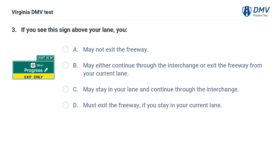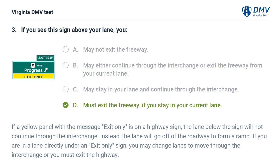If you see this sign above your lane, you: A. May not exit the freeway, B. May either continue through the interchange or exit the freeway from your current lane, C. May stay in your lane and continue through the interchange, D. Must exit the freeway if you stay in your current lane. If a yellow panel with the message 'Exit Only' is on a highway sign, the lane below the sign will not continue through the interchange. Instead, the lane will go off of the roadway to form a ramp. If you are in a lane directly under an exit only sign, you may change lanes to move through the interchange or you must exit the highway.